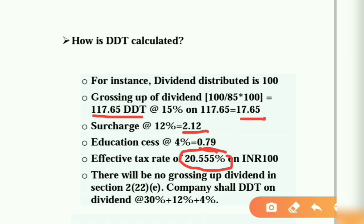Next point says, there will be no grossing up of dividend in Section 2, subsection 22, subsection E. This section I will be discussing in my next video. Usmein rate ho jayega 30% dividend tax plus 12% surcharge plus 4% CES. Jo bhi rate hoga, wo hamara is section pe applicable hoga.